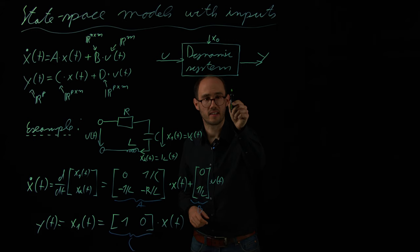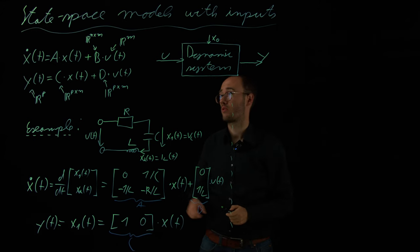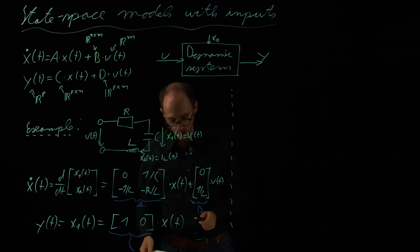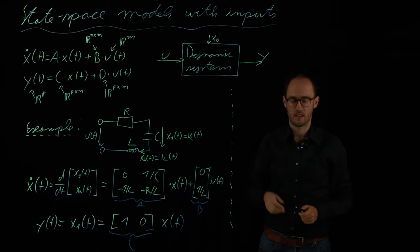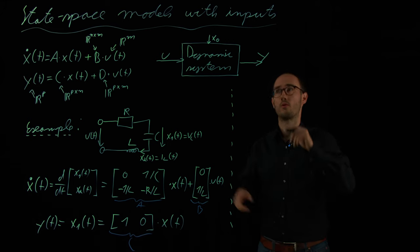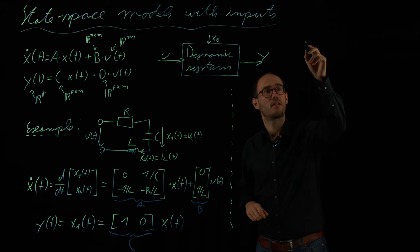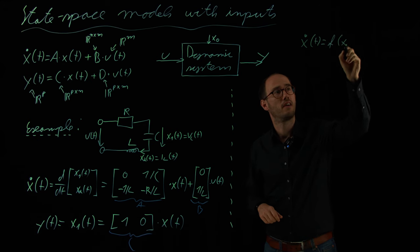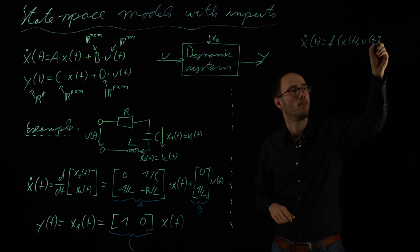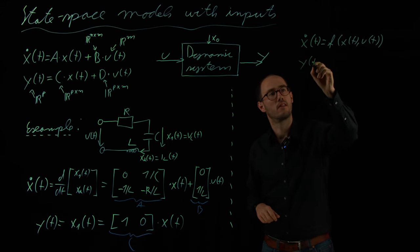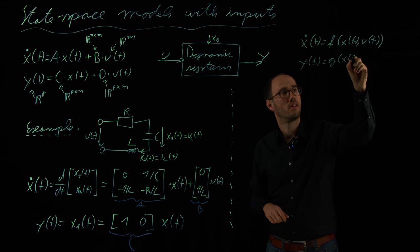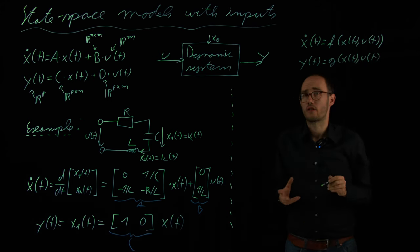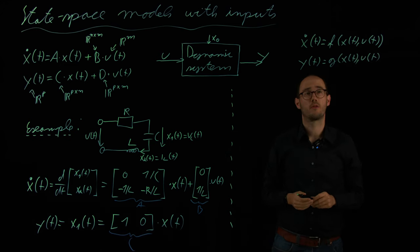So, this was an example for the linear case where we can describe the mapping from the inputs and the states towards the state dynamics and to the outputs in a linear fashion. But, of course, as we have already discussed the non-linear ODE, we can also extend that to a state-space model with inputs and outputs. So, for that, we can write x dot of t is equal to the right-hand side f of x of t and u of t.